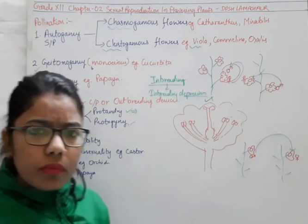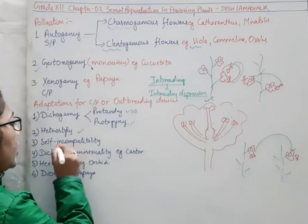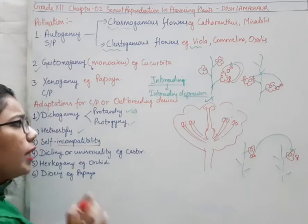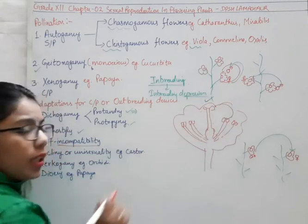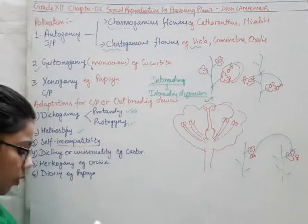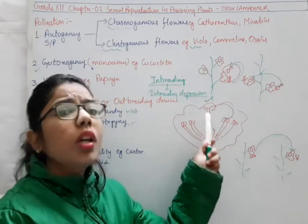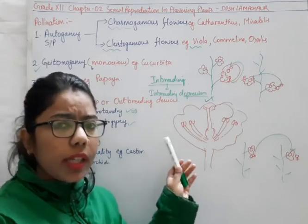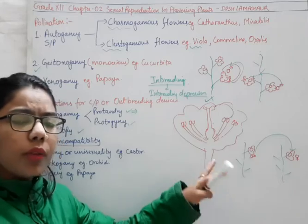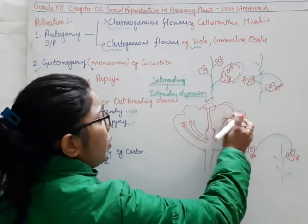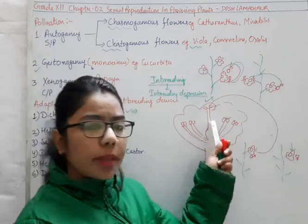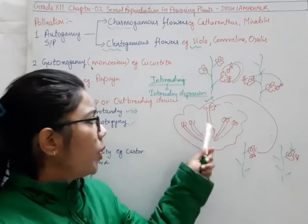Another one is self-incompatibility. The flower will not be compatible with the anthers or pollen grains of the same flower. If any pollen grains come from the anther to the stigma of the same flower, the stigma will not be compatible with those pollen grains. Self-incompatibility means the pollen grains of the same flower will not be able to fertilize or pollinate on the stigma of the same one. The flowers are self-incompatible — they will not accept their own pollen grains, ensuring cross-pollination.